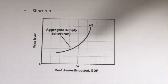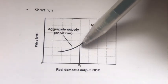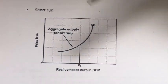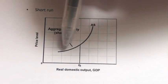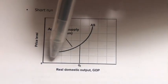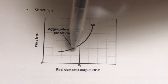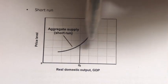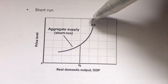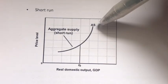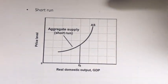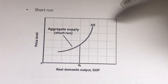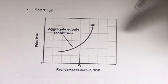There's another important point here. QF is the full employment GDP level. The shape of the aggregate supply curve is relatively flatter before QF. However, after QF, the shape of the aggregate supply curve is relatively steeper. The main reason for this is due to per unit production costs.